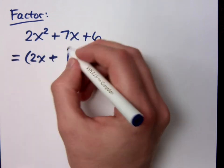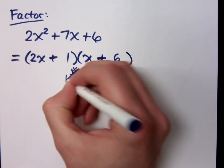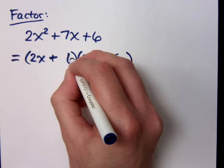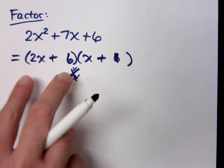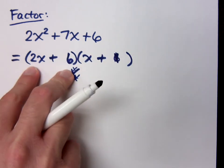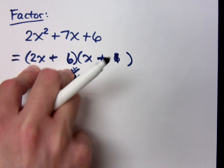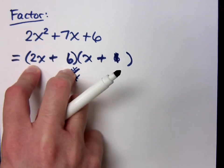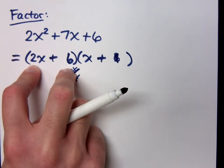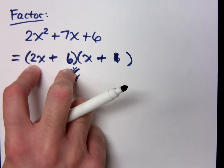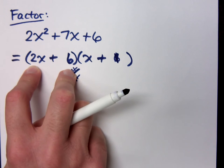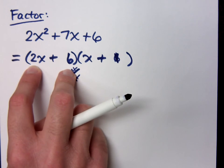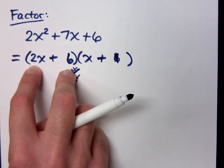That's wrong. Some of you may say, well, that's stupid — you should've put the 6 here and the 1 here. But 2x plus 6 has a common factor, right? There was no common factor in the original. You may not have a common factor in these guys. Fail. It's a contradiction. Don't do it.